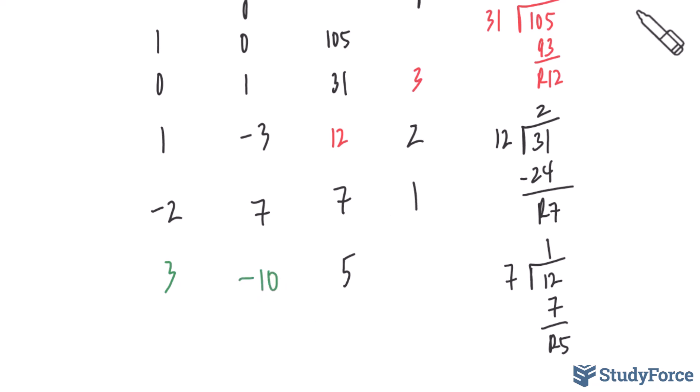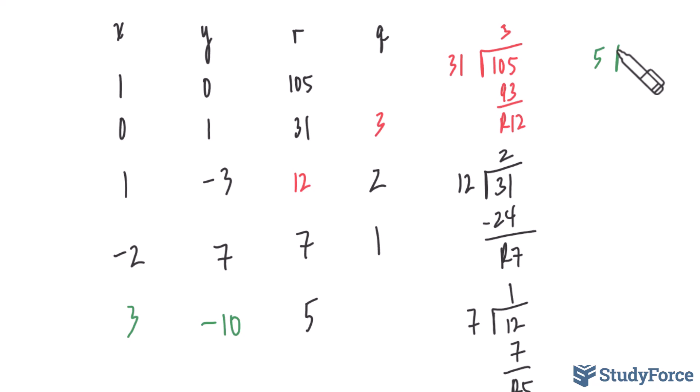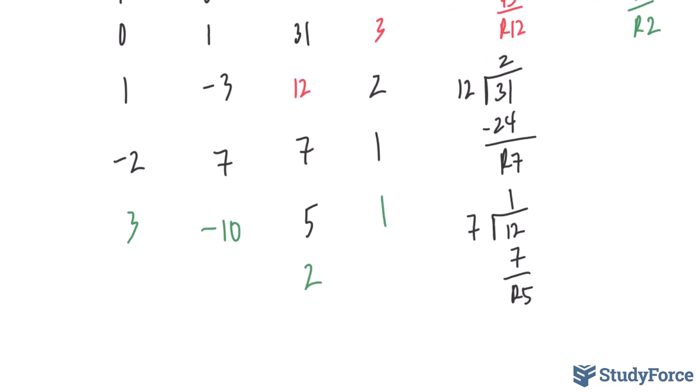So now we have 7 divided by 5. 5 fits into 7 once. 1 times 5 is 5 and we get a remainder of 2. So the quotient is 1 and the remainder is 2. We're getting awfully close to our goal. 1 times 3 is 3. Negative 2 take away 3 is negative 5. 1 times negative 10 is negative 10. 7 take away negative 10 is 17.